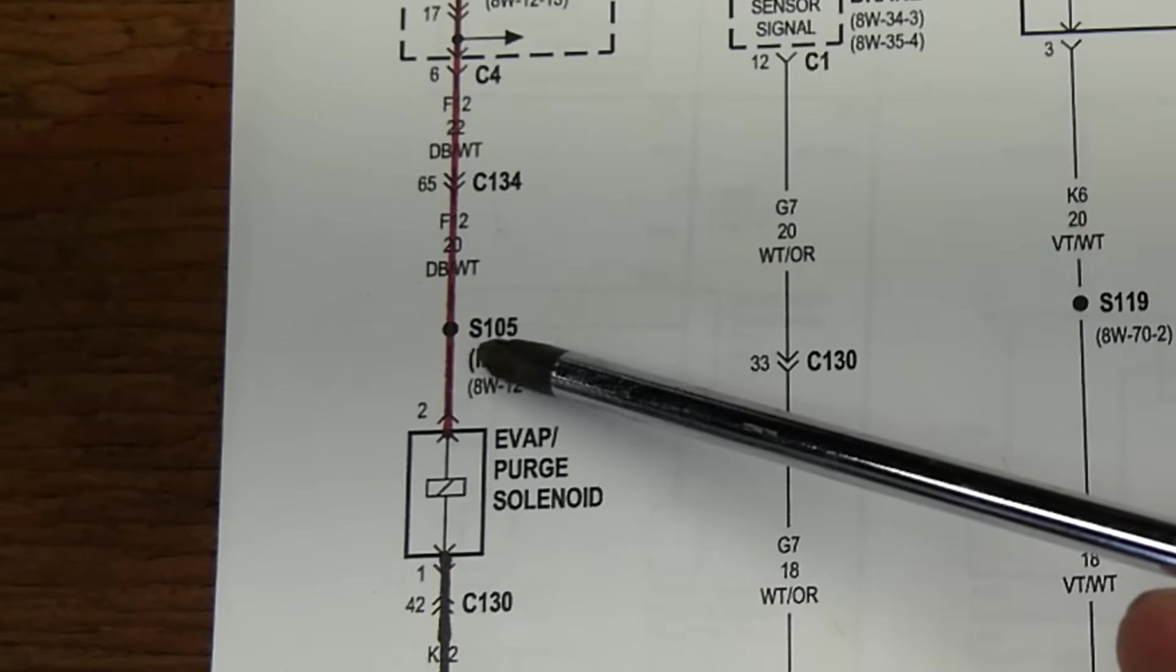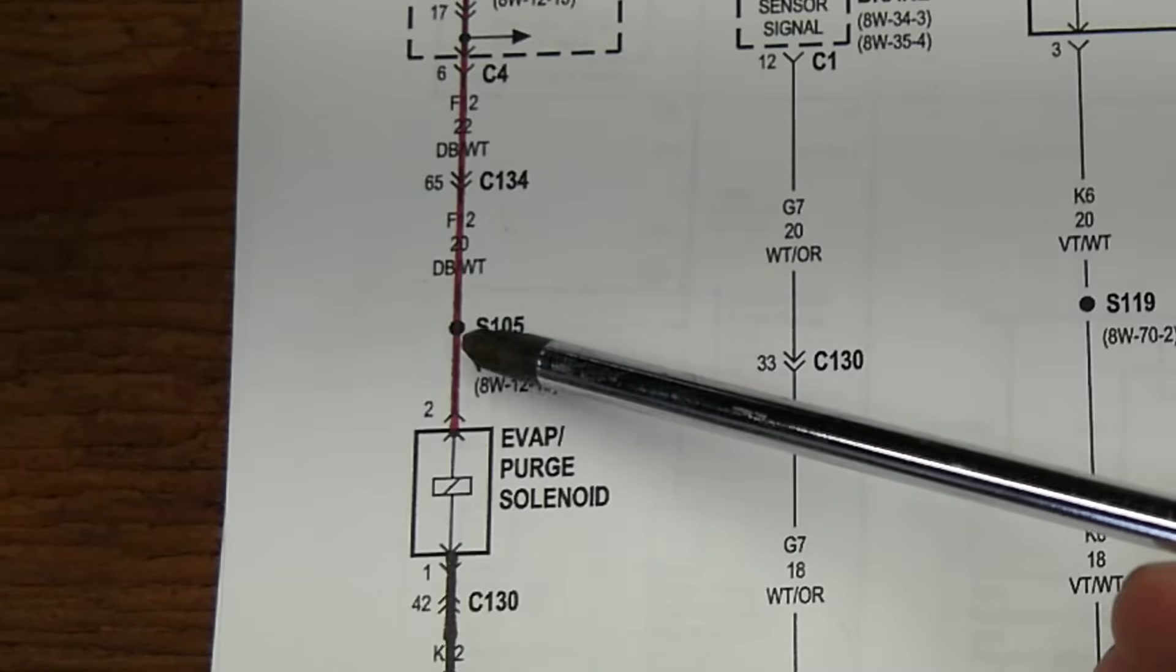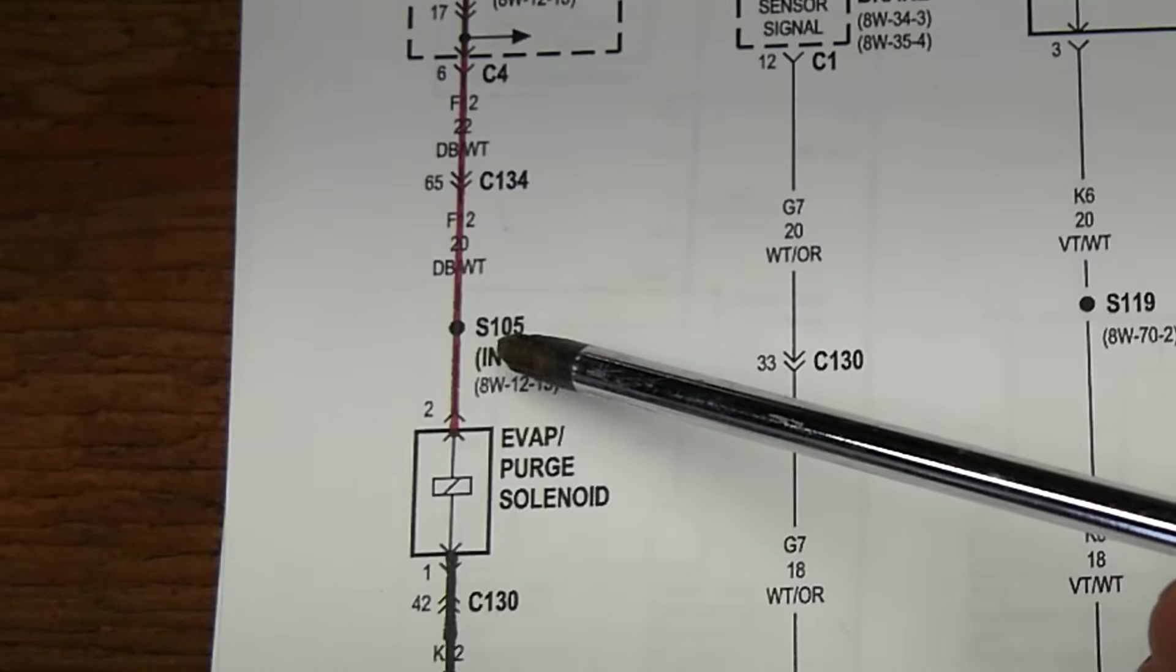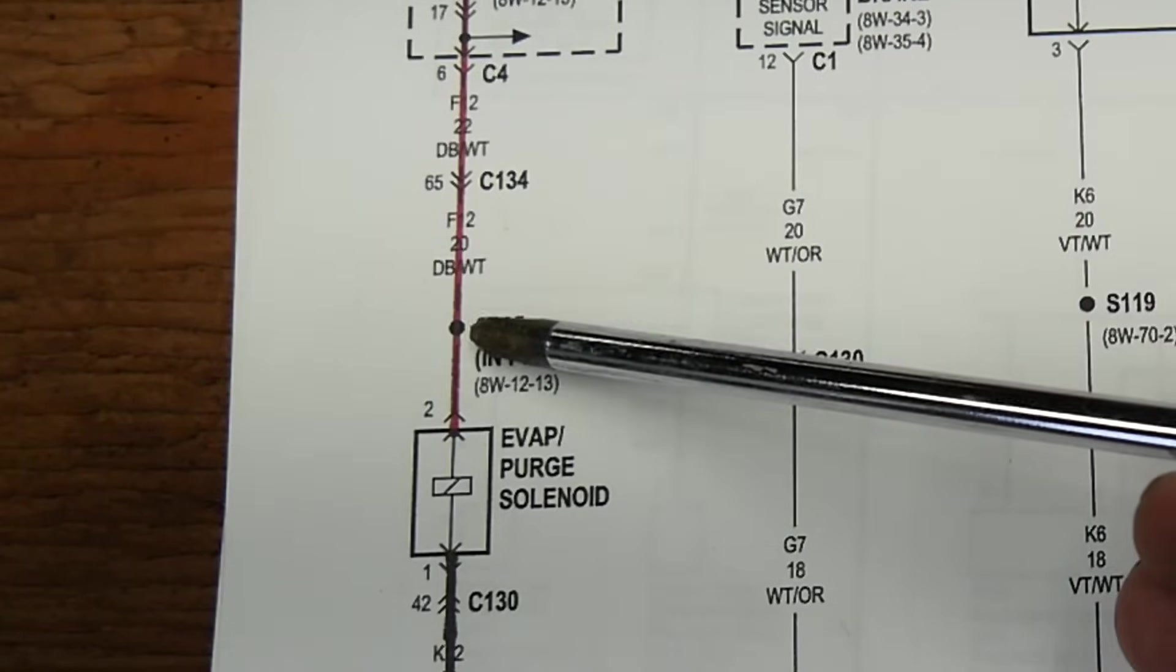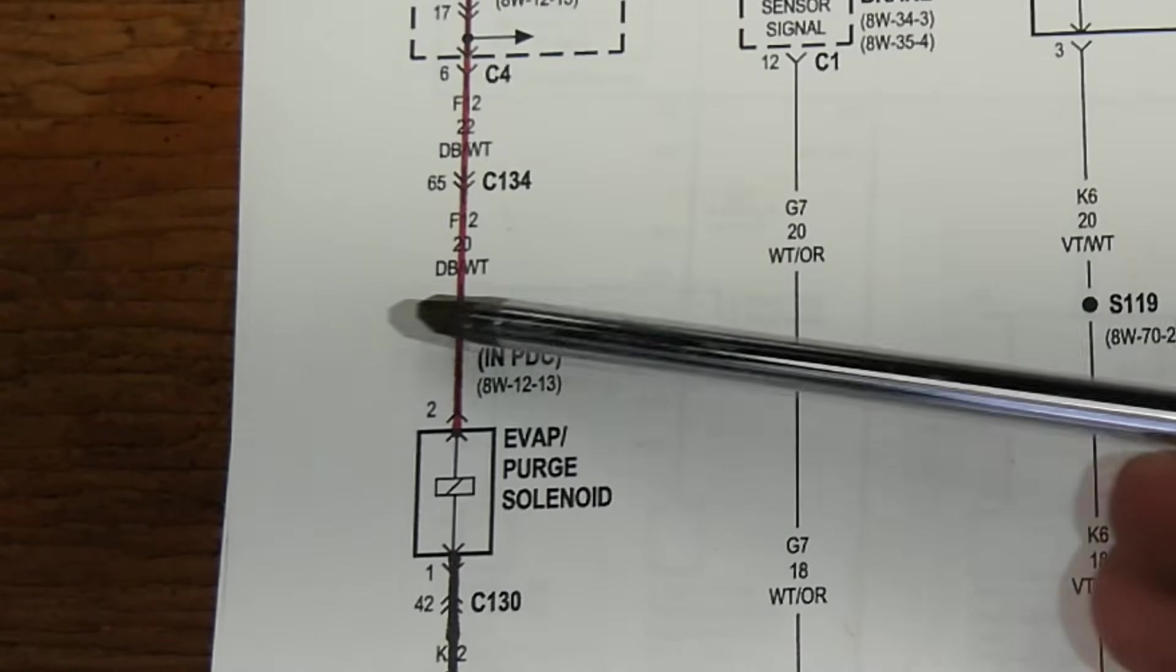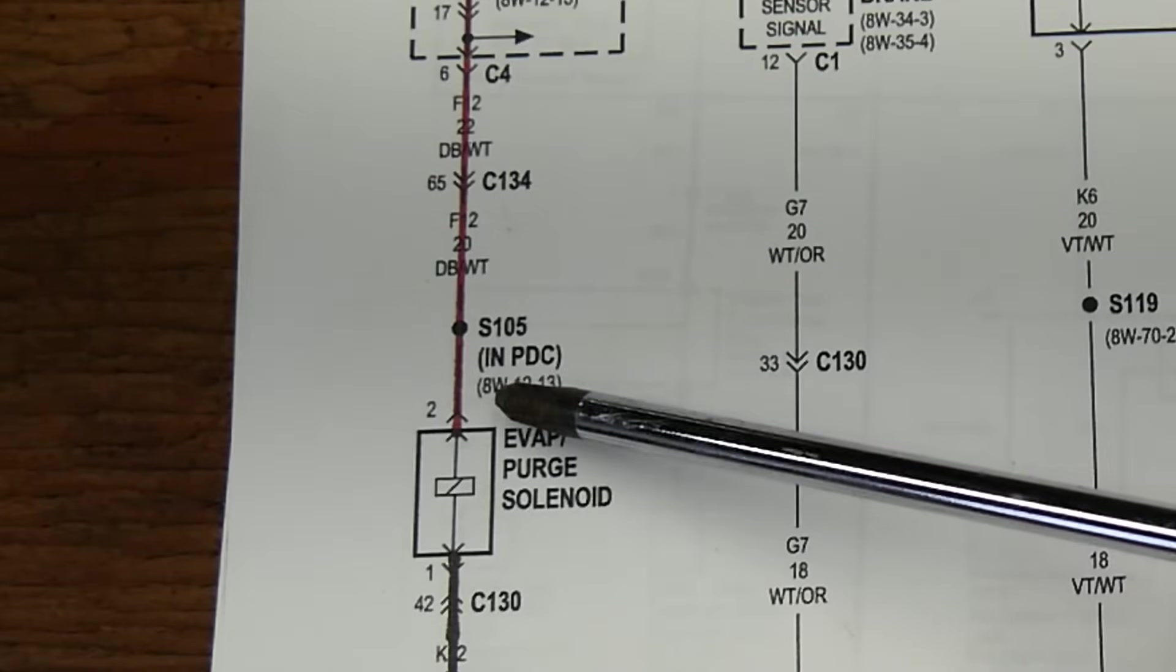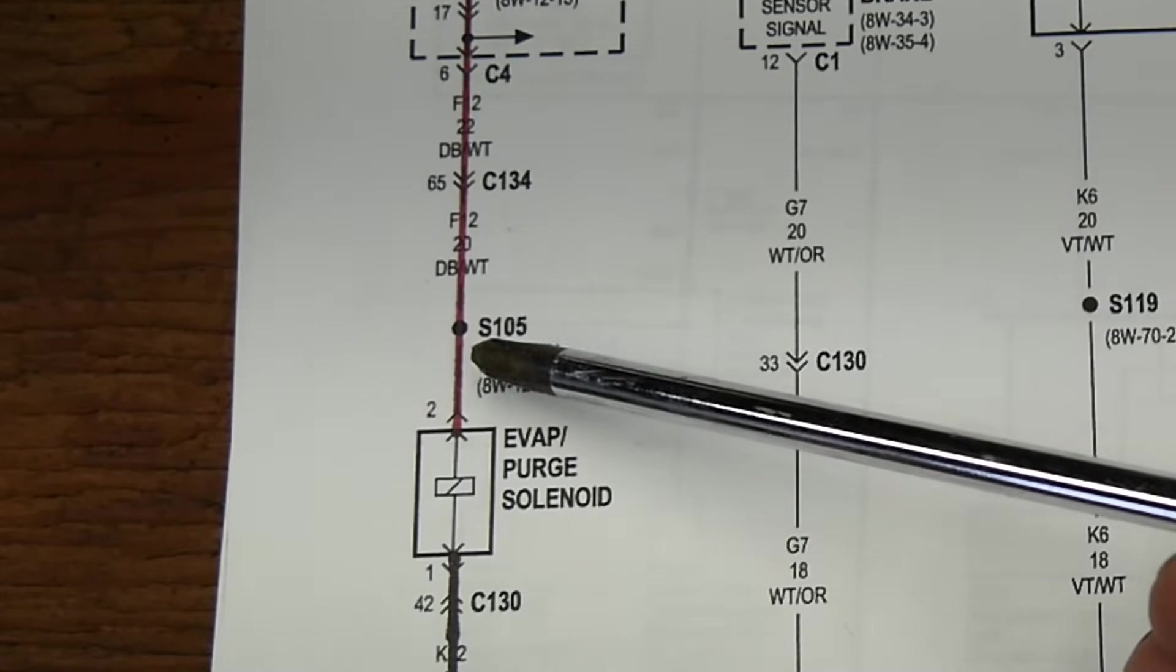And down here, where it says S105, that's a splice or a junction. If you were to find out where power goes from this fuse to this junction and splices off to different circuits, you would need to go find the splice or S105.